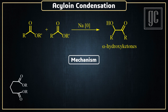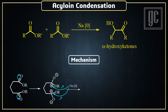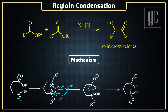Here we are taking a classical example of the acyloin reaction to explain the mechanism. In the ester group, the carbonyl double bond moves toward the oxygen atom and as a result a positive charge on carbon is generated. Sodium metal transfers one electron to the carbocation and a free radical is generated. Two free radicals then interact with each other and form a carbon-carbon single bond, and a cyclic structure is formed.